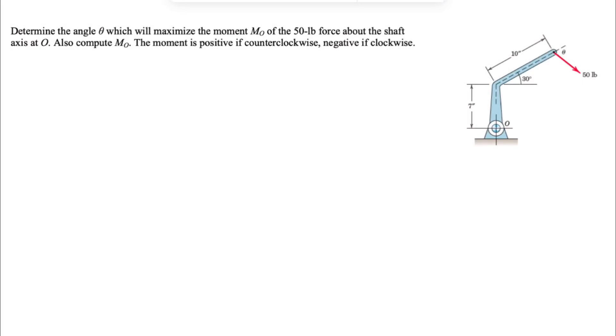All right, guys, we have another question from the second chapter of the Merriam textbook, Engineering Mechanics. In this one, we need to determine the angle theta which will maximize the moment MO about the shaft axis at O. We have the force of 50 pounds, and as always, counterclockwise moment is positive and clockwise moment is negative.